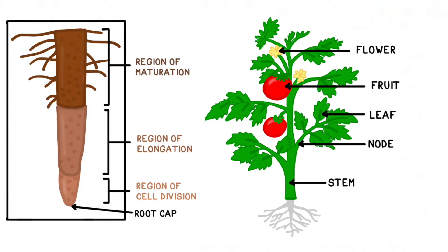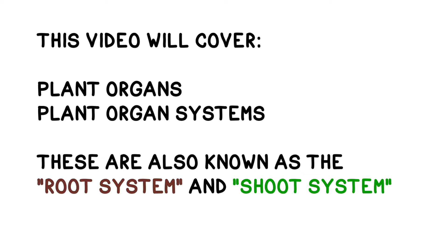Plants consist of organs, tissues, and cells. Each of them is a specific structure that allows them to perform a particular set of functions that help the plant to survive. This video will cover plant organs and plant organ systems, also known as the root system and the shoot system.